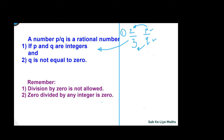The definition of a rational number P by Q requires that P and Q are integers — both numerator and denominator are integers — and the second condition is Q is not equal to 0. Here Q is equal to 3, and 3 is not equal to 0. That's why 2 by 3 is a rational number.